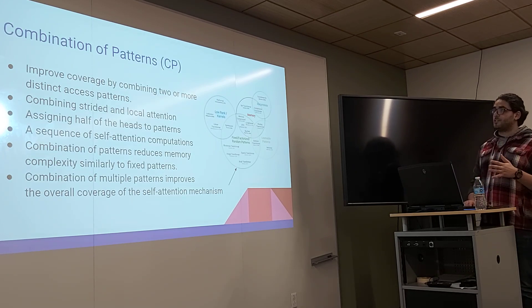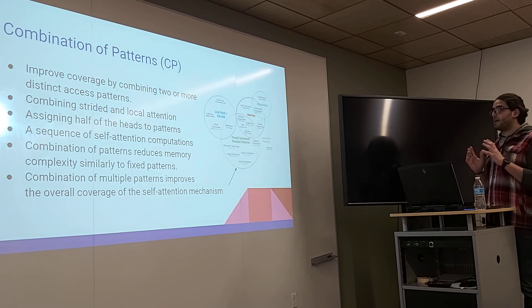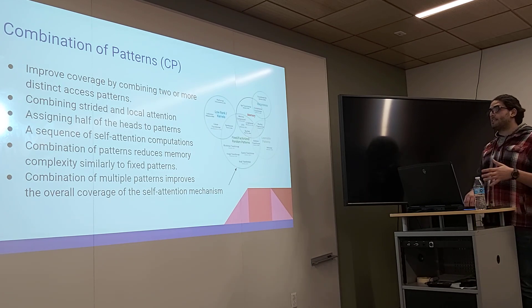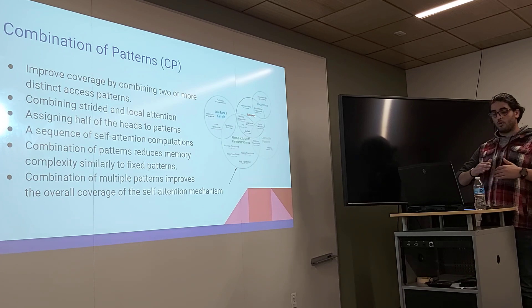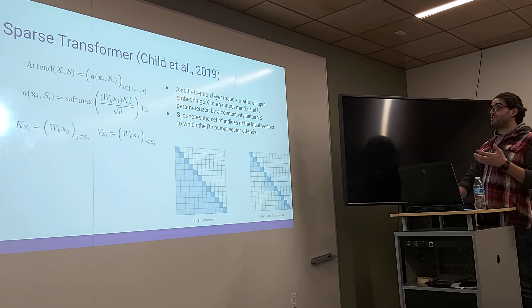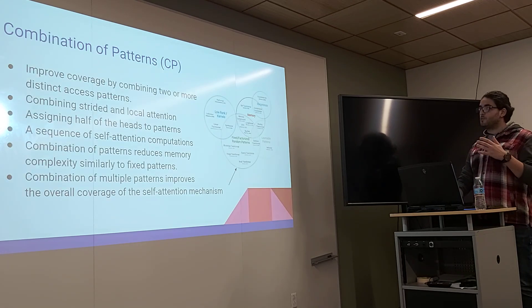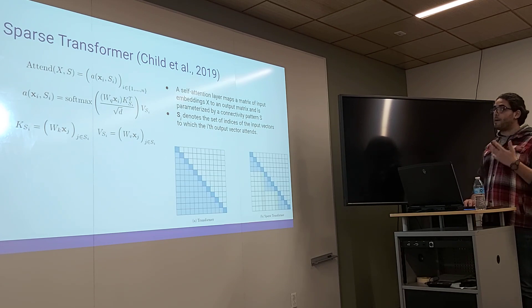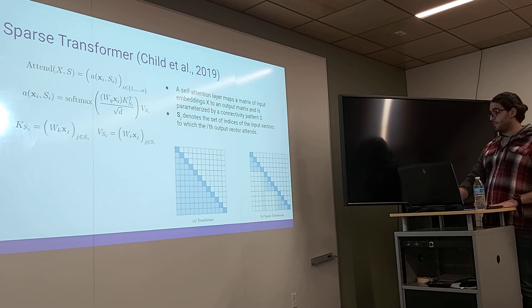In the same category, we have a combination of patterns. In this category, we improve the coverage by combining two or more distinct axis patterns, by combining striding and local attention, and assigning half of the heads to patterns. A combination of patterns reduces memory complexities similarly to fixed patterns. The combination of multiple patterns eventually improves the overall coverage of the self-attention mechanism, which is an example of the sparse transformer by Child et al. in 2019, which by the way is part of the combination of patterns and the fixed patterns. The idea here is to add the connectivity patterns S to the attention matrix. Here we can see the matrix is way more sparsified compared to the attention matrix in the original paper.